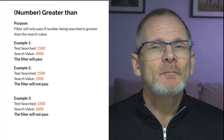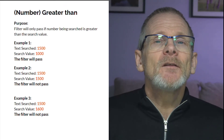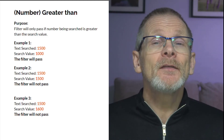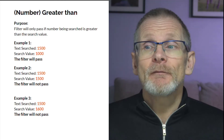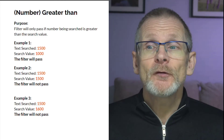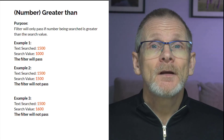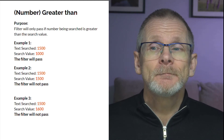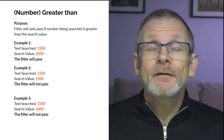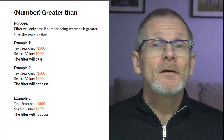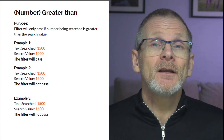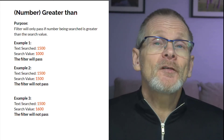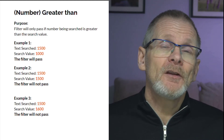'Number greater than' — the Zap will only continue if the number we're searching is greater than the number in our search field. If we're searching against the number 1500 and put in the value 1000, the filter will pass because 1500 is greater than 1000. If we search for 1500, the filter won't pass because 1500 is not greater than 1500 — it has to be strictly greater. Searching for 1600 also wouldn't pass.